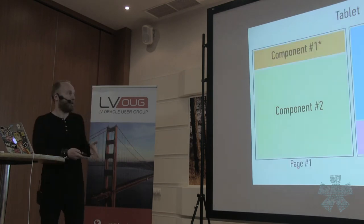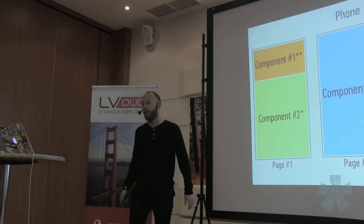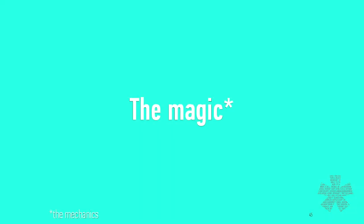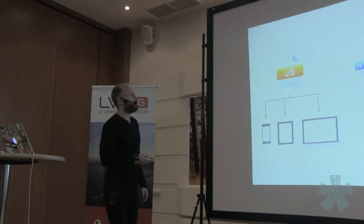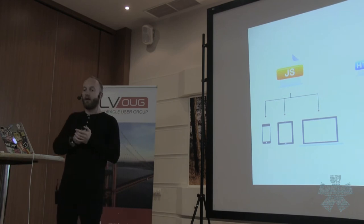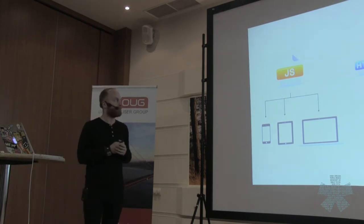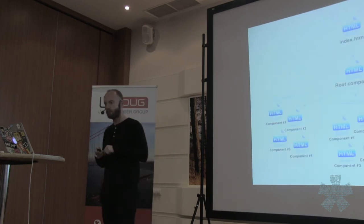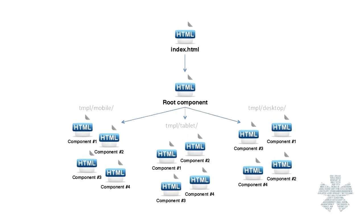Here we should load every component from the start of the application, but on mobile we should load only two. Okay, let's go to the magic. We should switch templates for every device type for every web application. The idea could work, and then we will have a component tree to make a cross-platform web application — we can discuss it a little bit later.